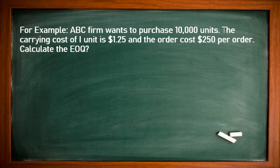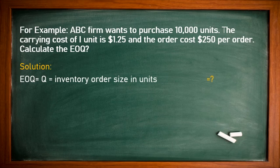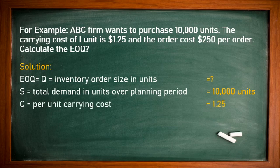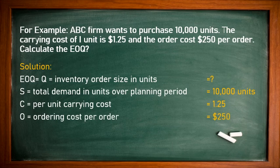For example, ABC Firm wants to purchase 10,000 units. The carrying cost of one unit is $1.25 and the ordering cost is $250 per order. What would be the EOQ? Q equals the inventory order size we need to find. S equals 10,000 units as the total demand over the planning period. C equals $1.25 as the carrying cost, and O equals $250 as the ordering cost.